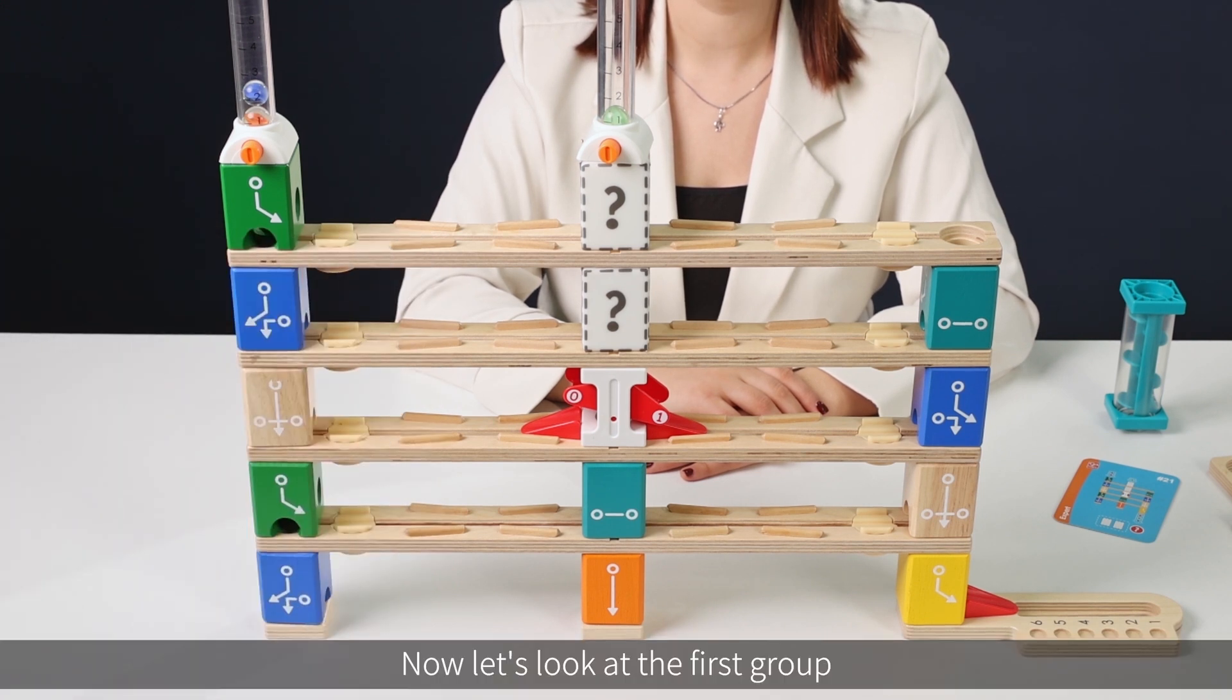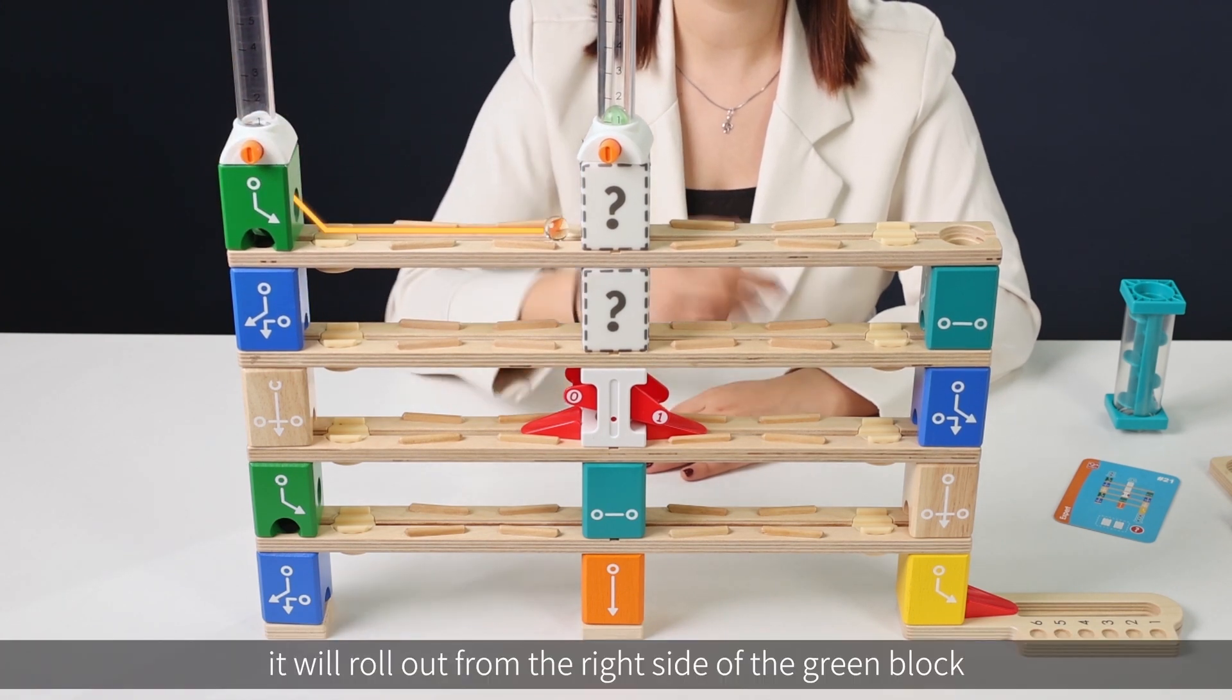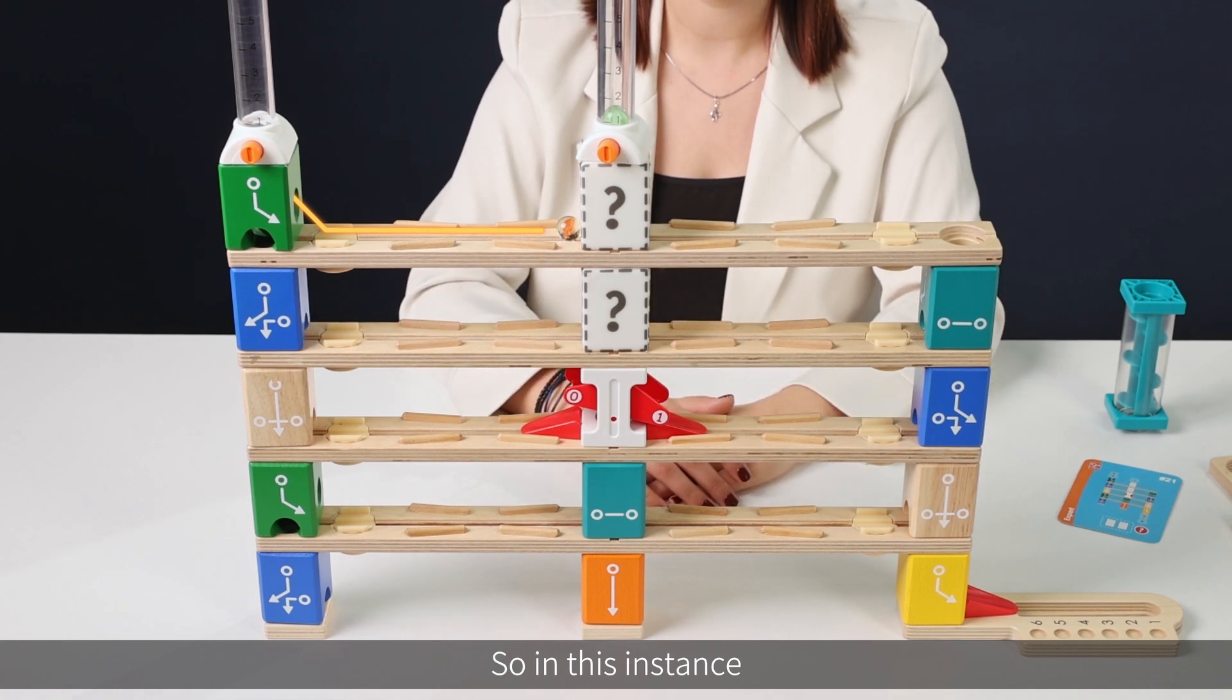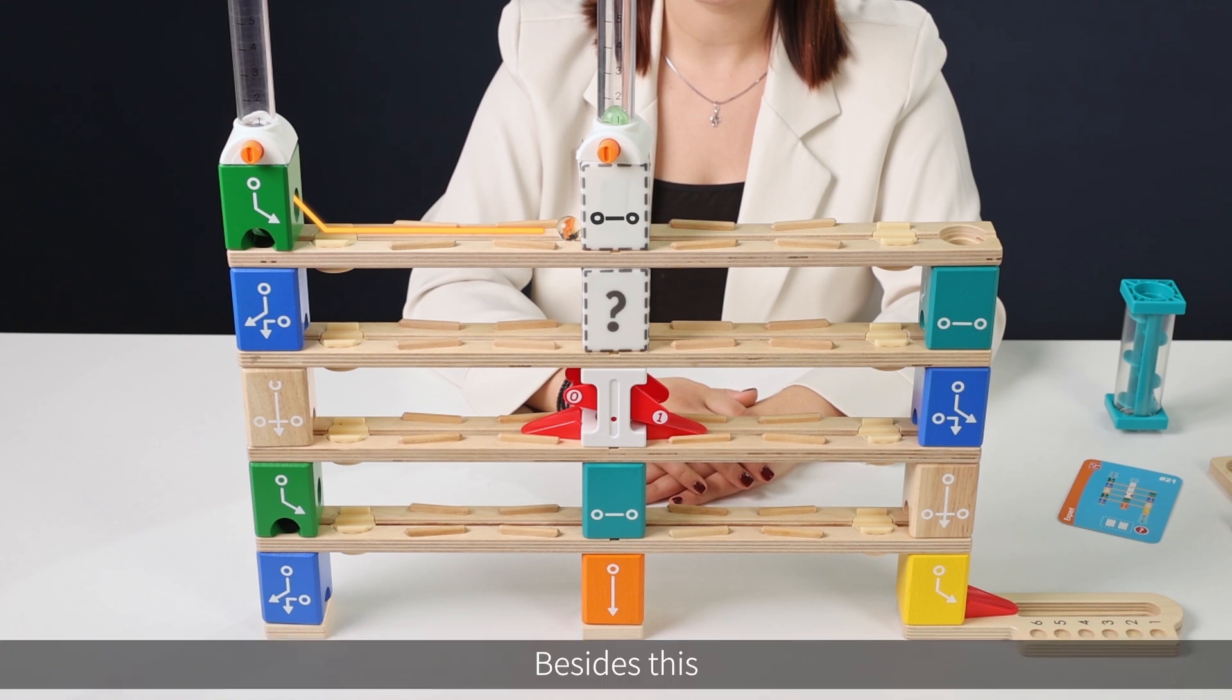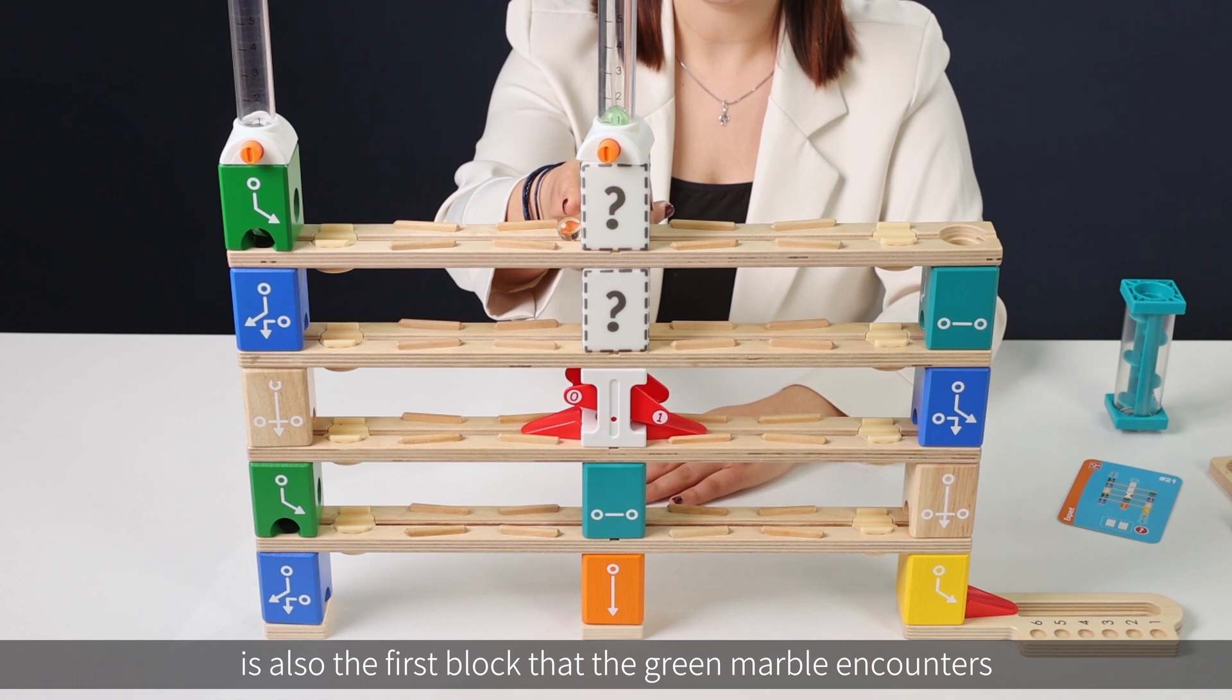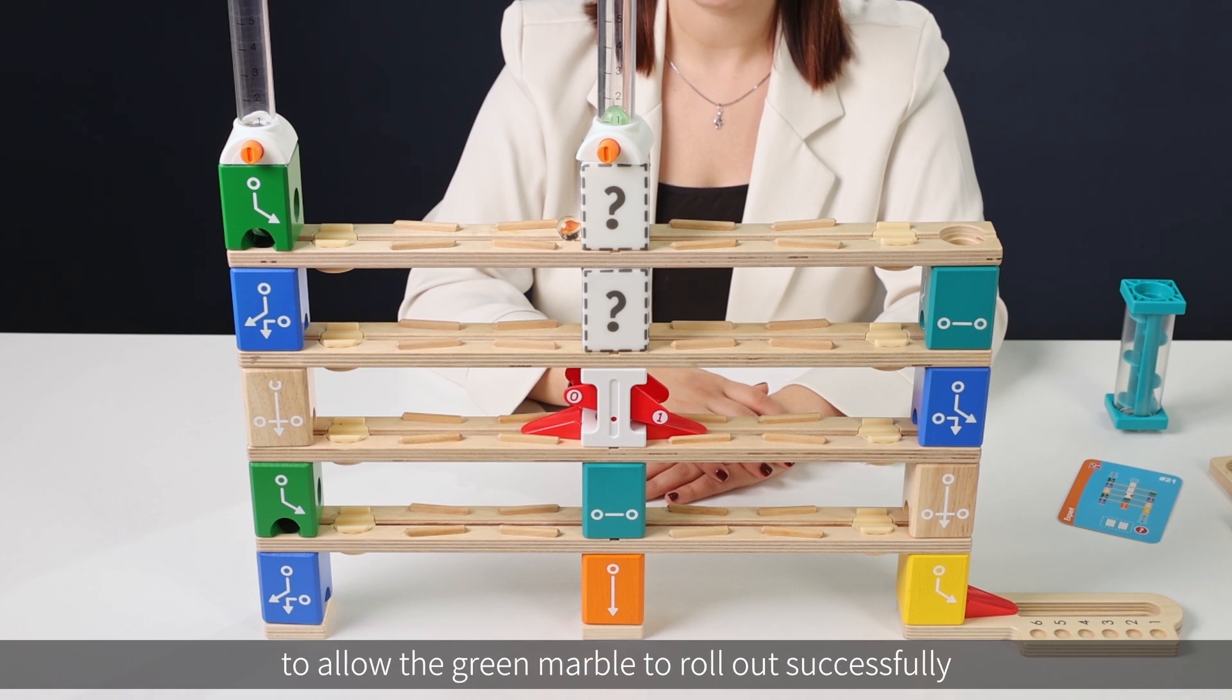Now let's look at the first group and try to imagine a possible route. When we launch the red marble it will roll out from the right side of the green block and then hit the first secret block. So in this instance this secret block needs at least one path that will connect the left and the right. Besides this, according to the challenge card we can see that the first secret block is also the first block that the green marble encounters, which means that it also needs to have an exit below to allow the green marble to roll out successfully.